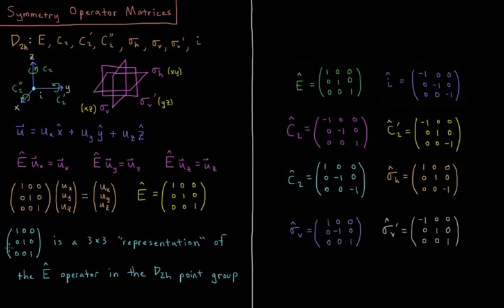So this identity matrix is a representation of the identity symmetry operator. Or more precisely, what we would say is that this matrix is a three by three representation of the E operator in the D2H point group.